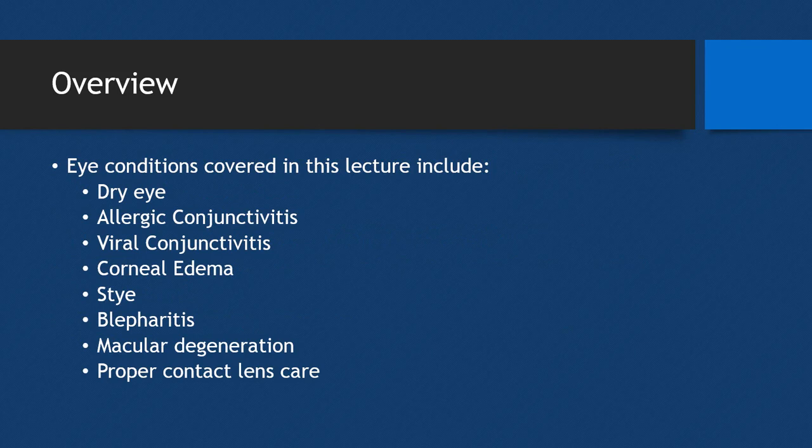We'll start with an overview of topics covered in this lecture. There is a large variety of conditions we will cover, but the two primary conditions you will see and make proper recommendations for in the community setting are dry eye and allergic conjunctivitis. Many other conditions may warrant nonpharmacologic or minor pharmacologic recommendations, but are generally more severe and require referral to an eye care provider.